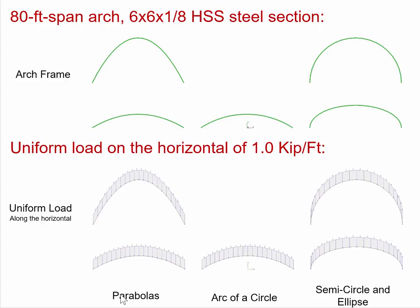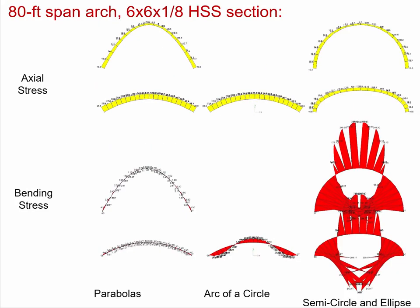So here we have parabolas, an arc of a circle, and here we have a semicircle and an ellipse. These columns are labeled so we know what they are. Each of these things is spanning 80 feet, and it's made out of a 6 by 6 by 1/8 inch hollow steel square tube. The load for each of these is uniform along the horizontal, and it's taken to be one kip per foot. Now we're going to do the computer analysis to determine the axial stresses and the bending stresses in this structural element. You'll notice in this case, axial stress is rendered as yellow.